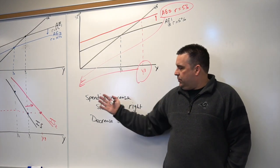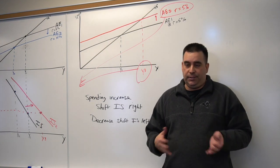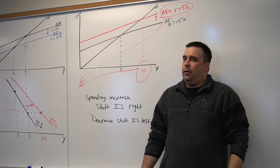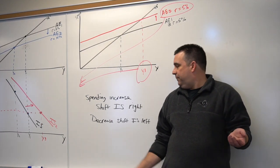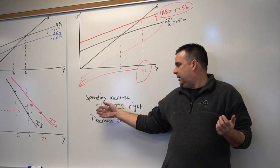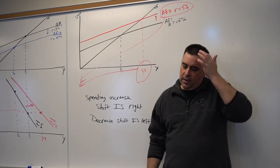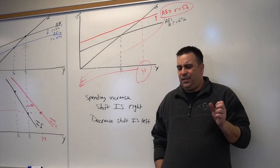One of the big things they use the IS curve for is they actually look at it in terms of mathematical tests. We're not really going to delve too much into the math for this model, but they actually look at impact of government spending. And that does always follow this model: government spending increases shift IS right, a decrease shifts IS left.